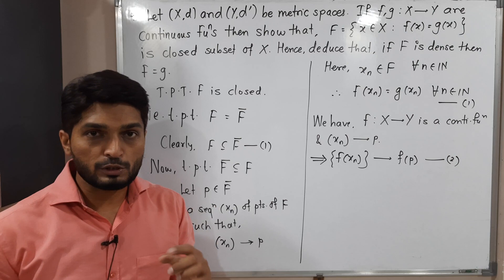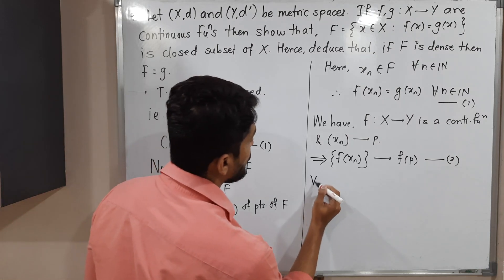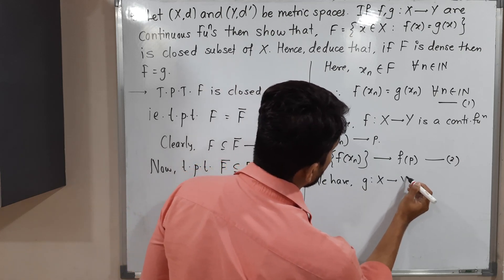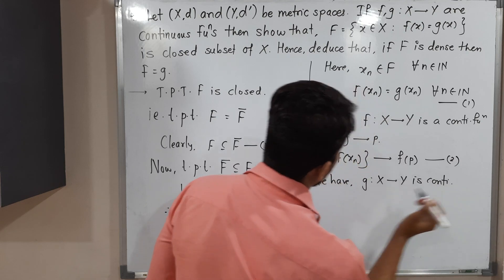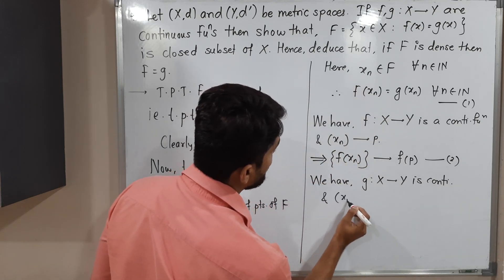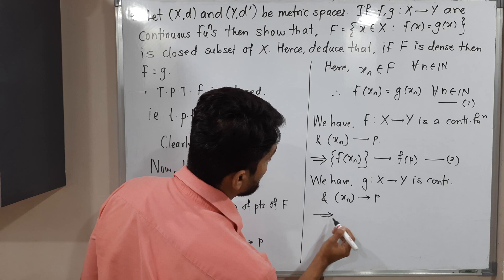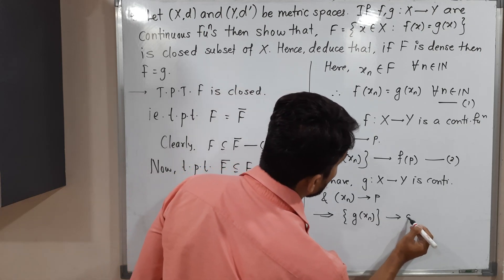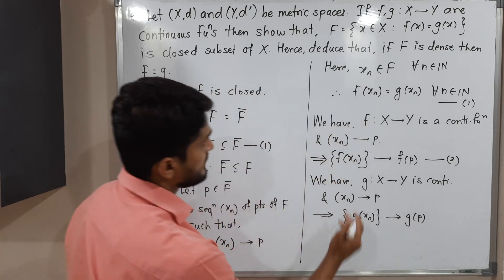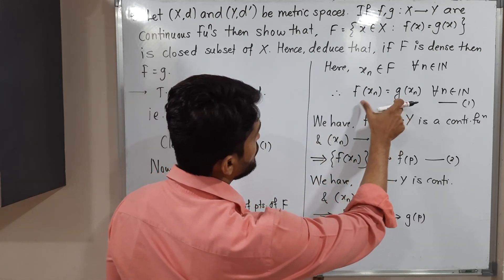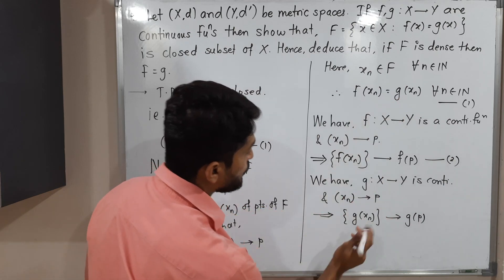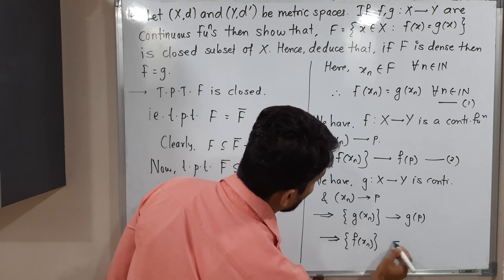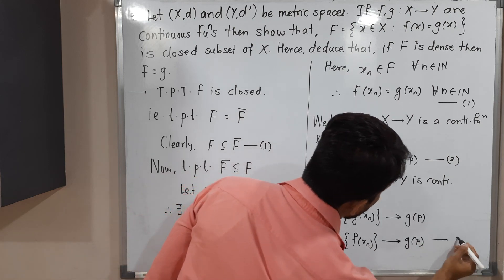We have two pieces of information: f is continuous and g from X to Y is also continuous. Using the second piece, since g is continuous and xₙ → p, by the sequential criterion we get g(xₙ) → g(p). But from equation (1) we already know f(xₙ) = g(xₙ), so we can replace g(xₙ) with f(xₙ), giving f(xₙ) → g(p). Call this equation (3).